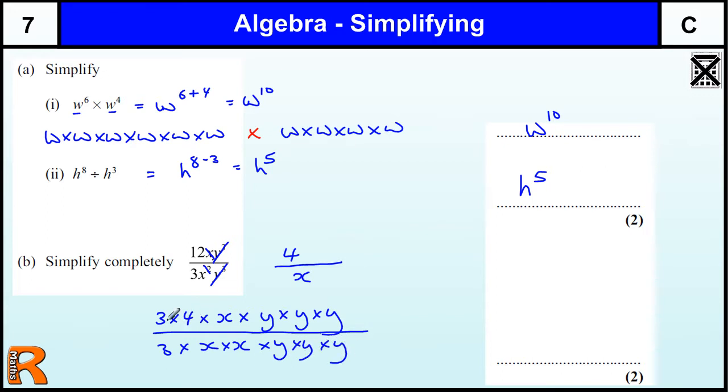And you can see that the 3's cancel. What's actually happening here is we're dividing top and bottom by 3 to leave a 1. We're dividing by x to leave a 1. We're dividing by y to leave 1 top and bottom, and another 1.